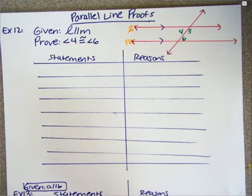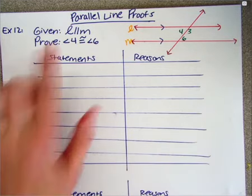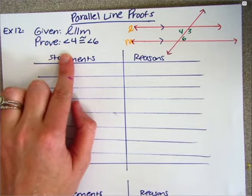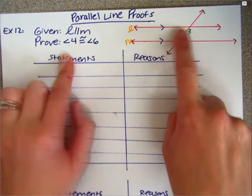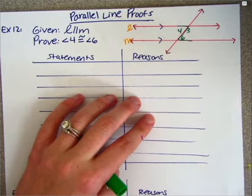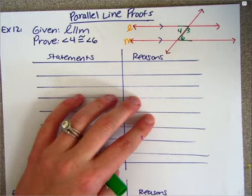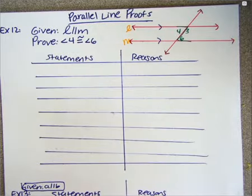There's one catch — one angle pair I haven't mentioned. You might say we can also use the alternate interior angle theorem, but unfortunately this time we can't, because of our proof. We are trying to prove that angles four and six are congruent. They make the Z shape, which means they are alternate interior angles, so we're actually proving the alternate interior angle theorem, and you cannot use a theorem in its own proof.